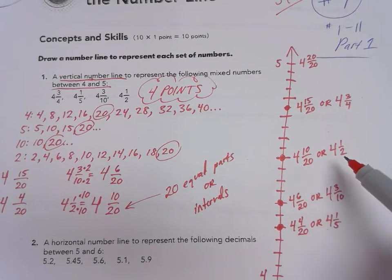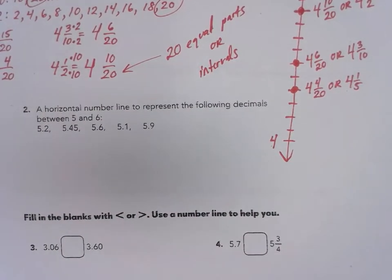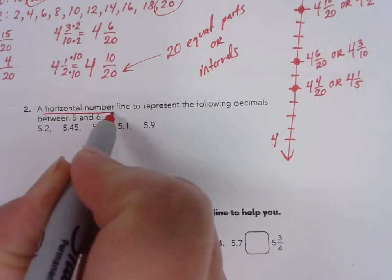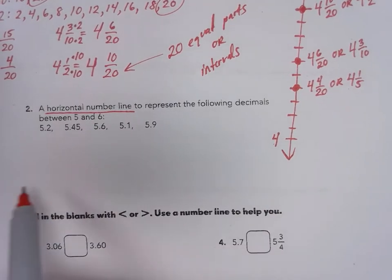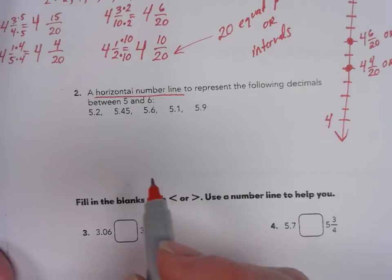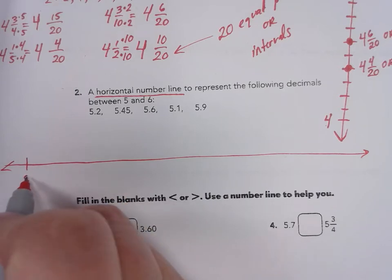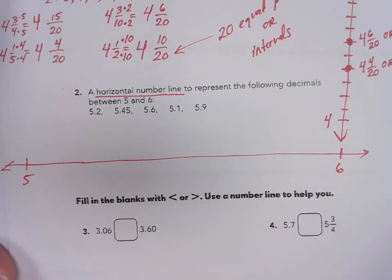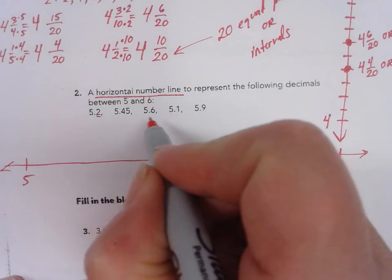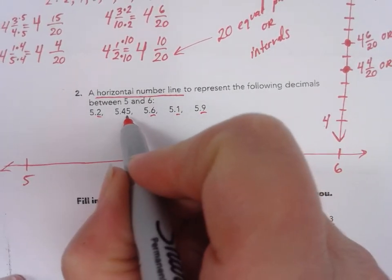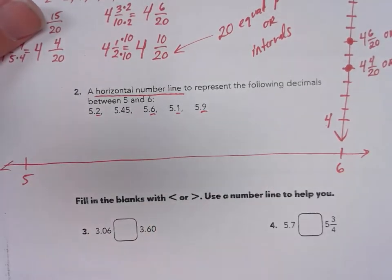Number two is different — this time I'm making a horizontal number line to represent decimals between five and six. Horizontal means from left to right, like looking at the horizon of a sunset. I'll make my number line starting at five and going to six. Looking at the place values, most of the decimals end in the tenths place, but one ends in the hundredths place — that could be tricky. I think I'll use what I know about the tenths place, splitting the number line into ten equal parts.